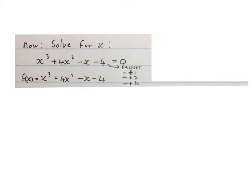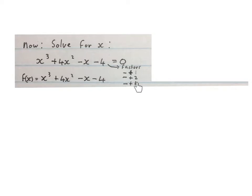We want to practice inspection today. The first thing you do is rewrite this in function notation. Then you take the constant term, minus 4, and write down its factors: minus 1 or plus 1, minus 2 or plus 2, minus 4 or plus 4. These factors are going to help us now.